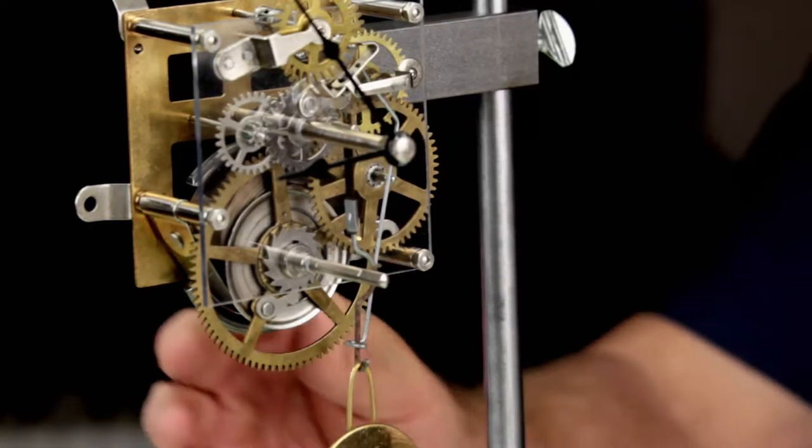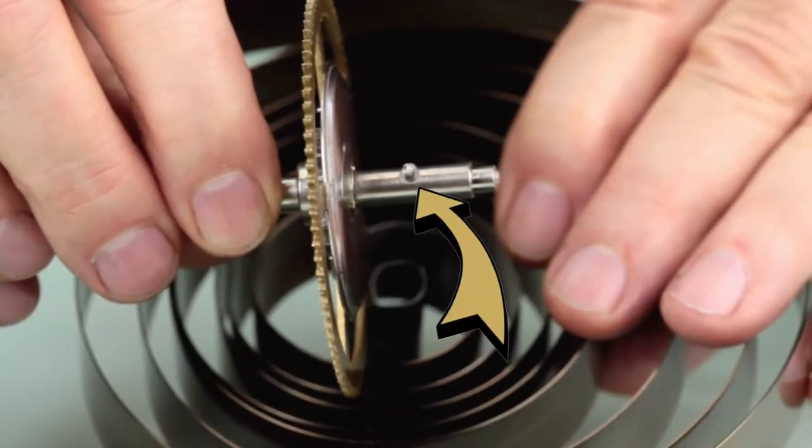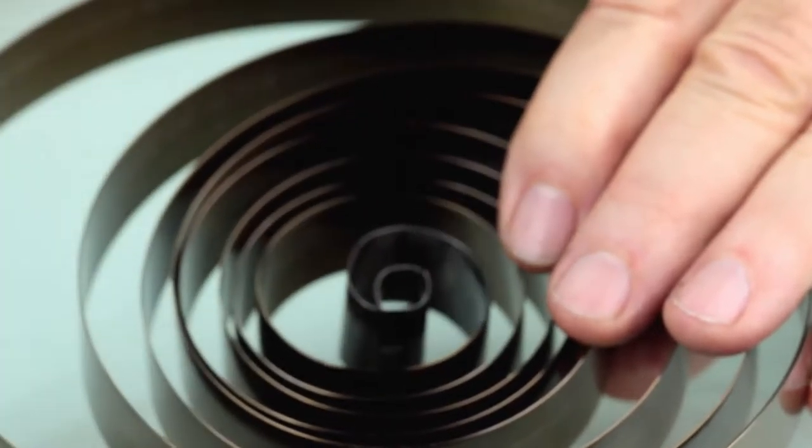The winding arbor has a square section to accept the winding key and a pin or hook to catch a hole in the inner end of the mainspring.